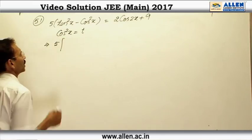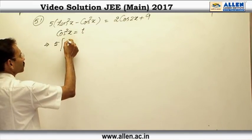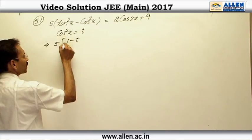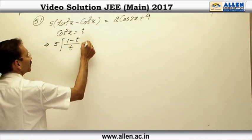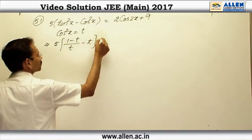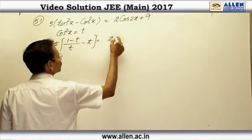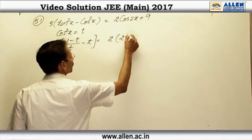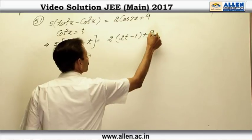This is 5 times tan square which is sin square x upon cos square x. So sin square x upon cos square x minus cos square x equals twice 2 cos square x minus 1 plus 9.